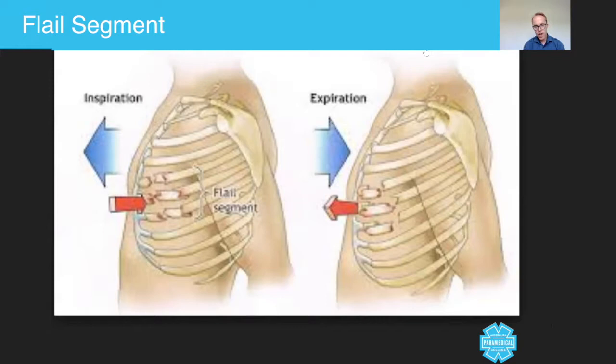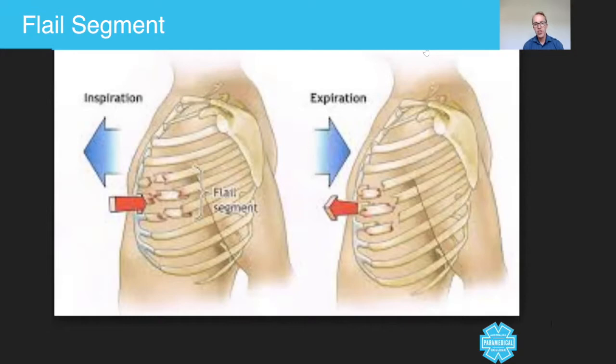What you have to remember about flail segment is that it takes a lot of energy to fracture a rib, let alone multiple ribs. Think about the typical mechanisms of injury: falls from heights landing on the chest, a serious assault, or being hit by a car at high speed. This patient will be in a lot of pain and may also be indicated for spinal immobilization under the Nexus criteria, because this is typically what we would call a distracting injury.